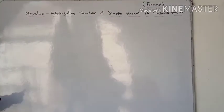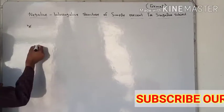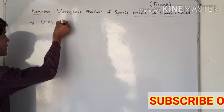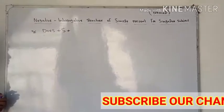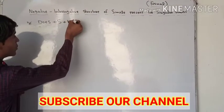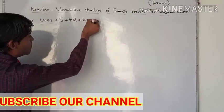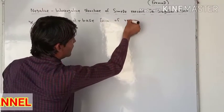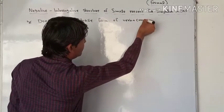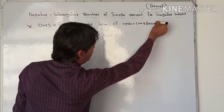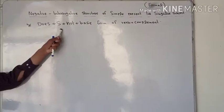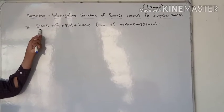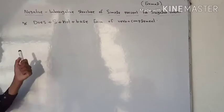The formula is: first we need 'does,' then 'does' is followed by the subject. Second, we need 'not.' Third, 'not' is followed by the base form of the verb. The base form of the verb is then followed by the complement. Now let's look at which subjects we can use before 'does' — we are going to discuss this only for the singular subject.